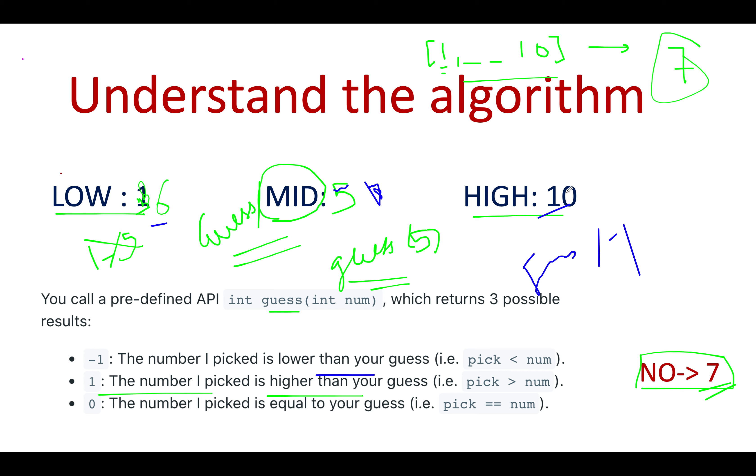So what we are going to do in such cases: we will reduce our high endpoint and that will be reduced to mid minus one. So what is the value of mid? Mid happens to be eight, eight minus one is seven. So high gets updated to seven.